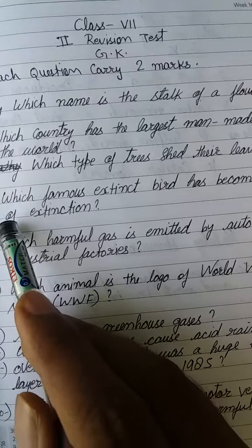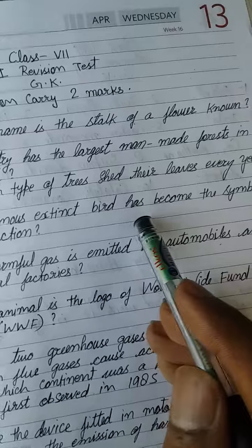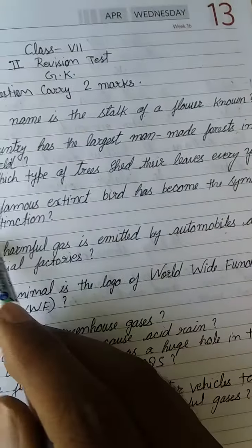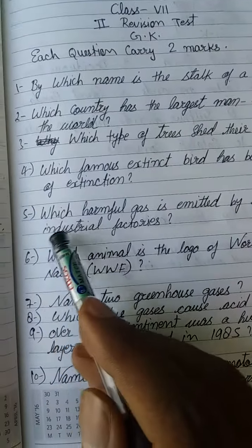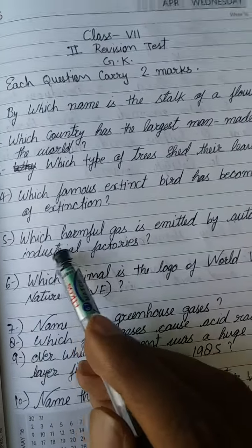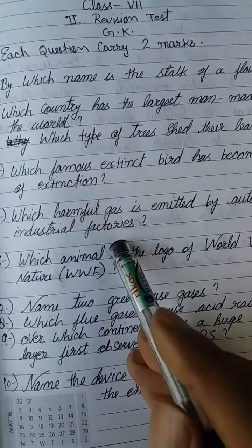Fourth question: Which famous extinct bird has become the symbol of extinction? Fifth question: Which harmful gas is emitted by automobiles and industrial factories?